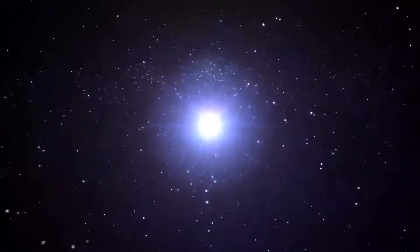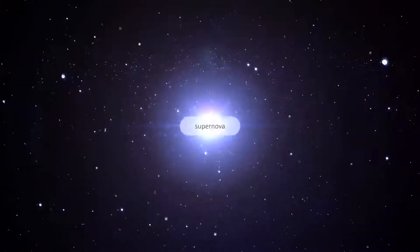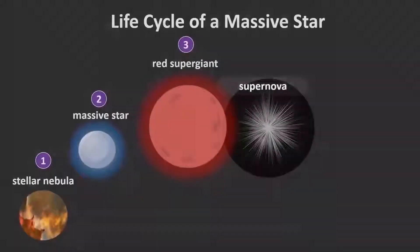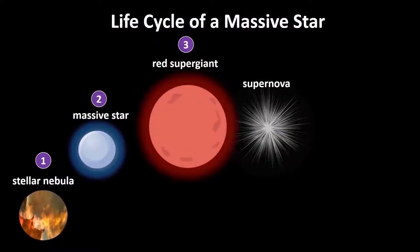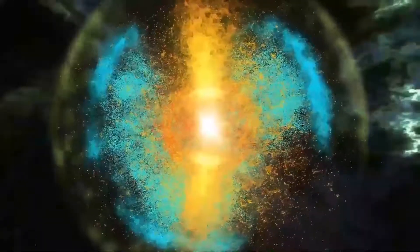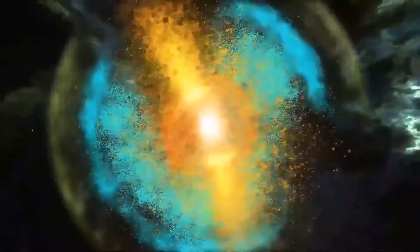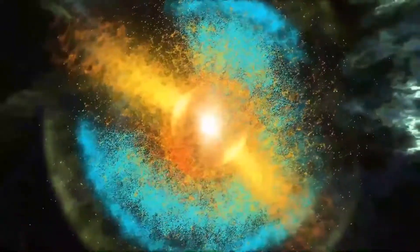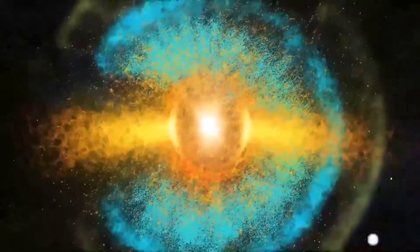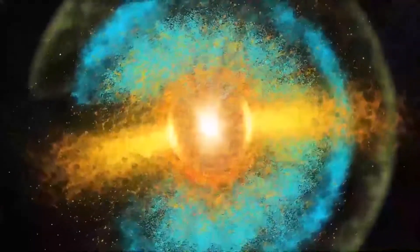With time, this supergiant becomes so dense that it crashes inward in a tremendous explosion called the supernova. At this stage, the light of the supernova explosion outshines all other stars in its galaxy. The explosion causes great clouds of gases to fly off the star, leaving behind a superdense core.